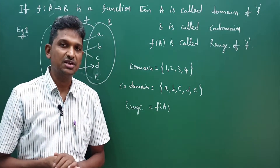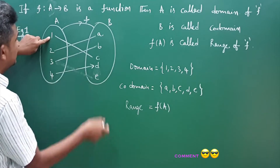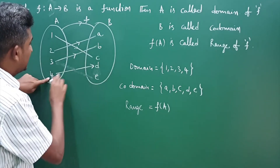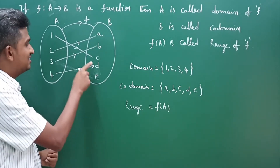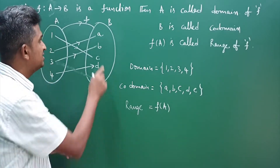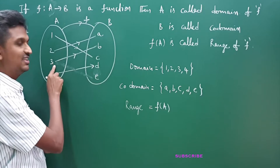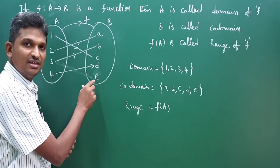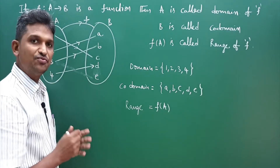I will explain what is image. If f from A to B is a function, image of 1 is c — you see 1 is related to c. Image of 2 is a. Image of 3 is b. Image of 4 is d. What is pre-image? Pre-image of a is 2. Pre-image of b is 3. Pre-image of d is 4. And what is pre-image of e? There is no pre-image for e.